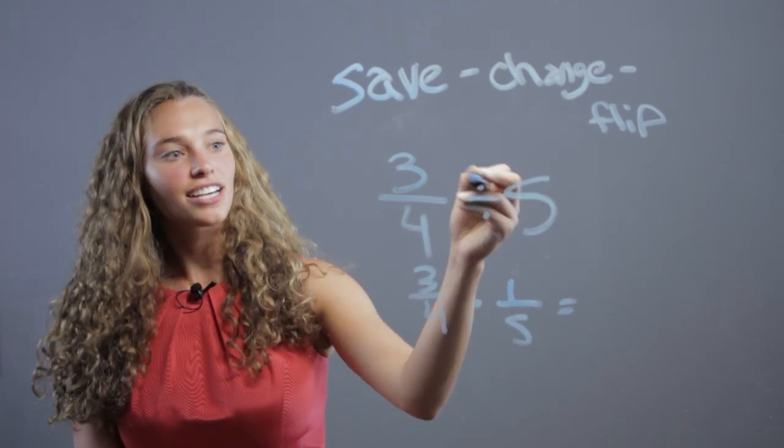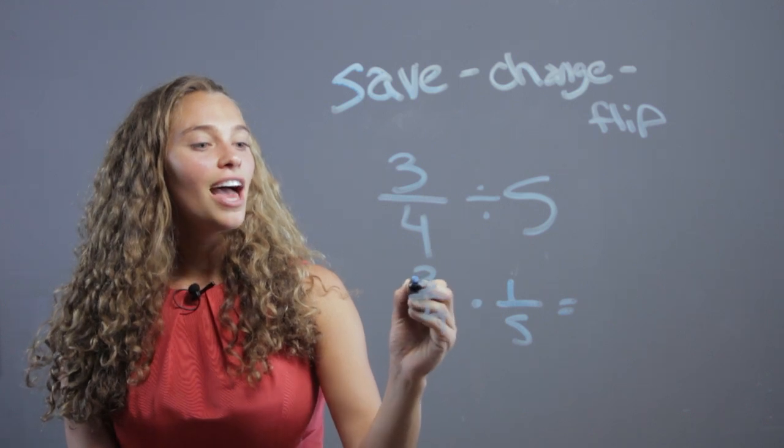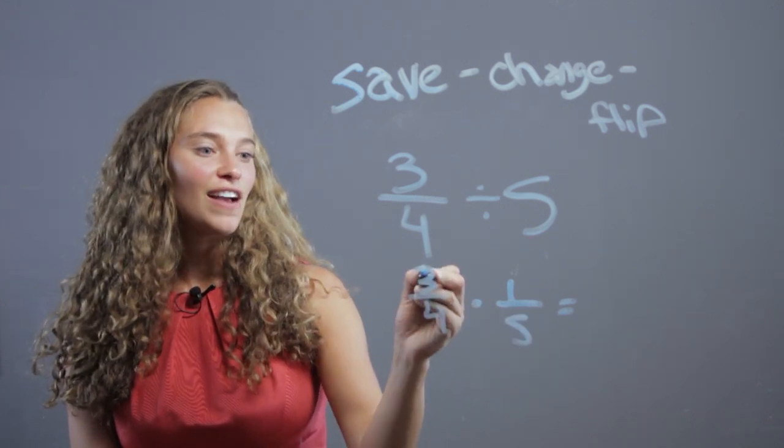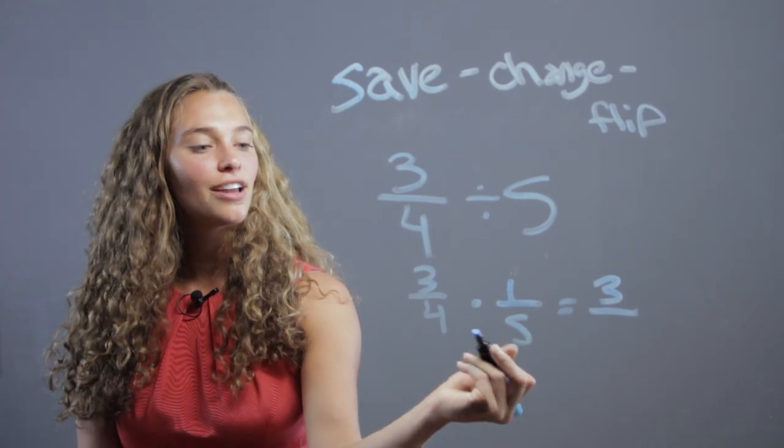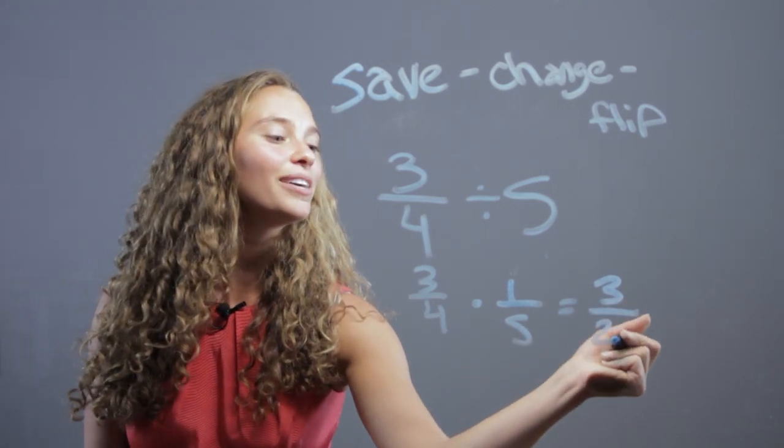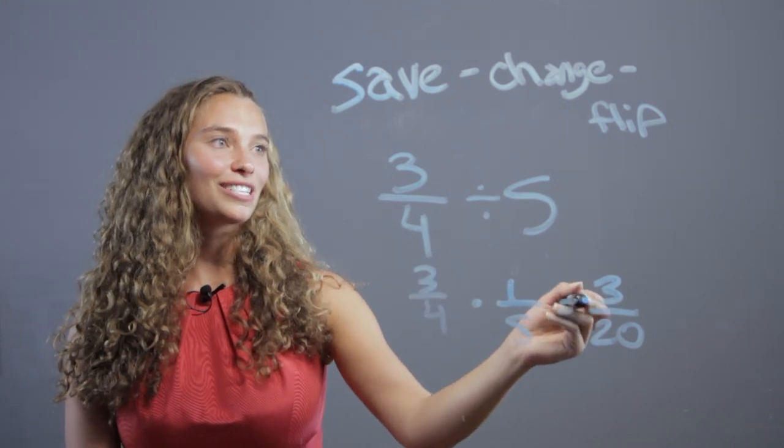For any number that's not a fraction like this, it's just going to be 1 over that number. Then we just multiply, like multiplying fractions. 3 times 1, we multiply the numerator to get 3. And then we multiply the denominator. 4 times 5 is 20. The answer of 3 fourths divided by 5 is 3 twentieths.